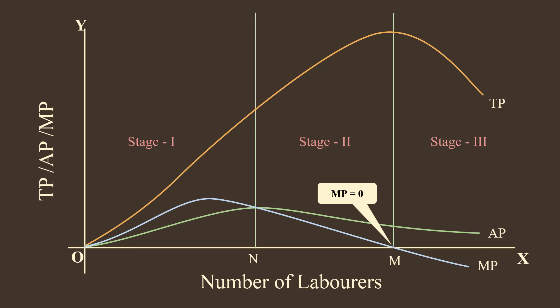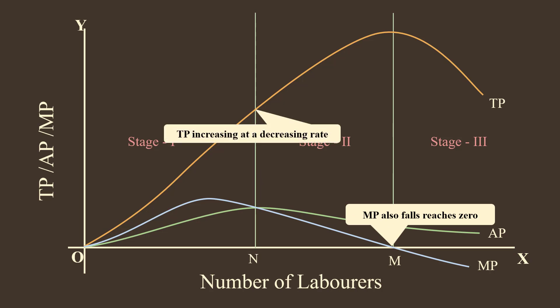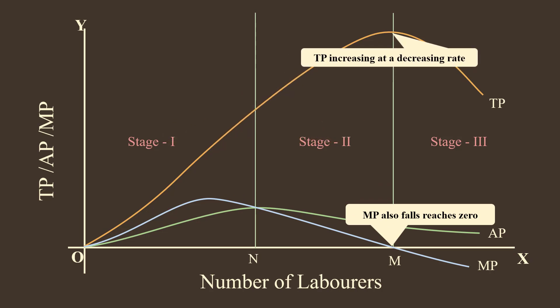In this stage: 1. Average product is falling and remains positive. 2. Marginal product is also falling and reaches zero. 3. Total product is increasing at a decreasing rate.